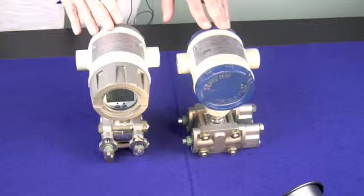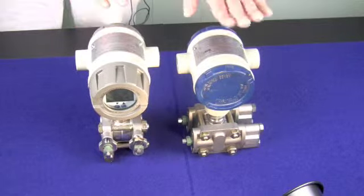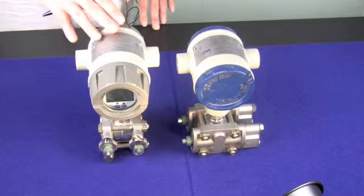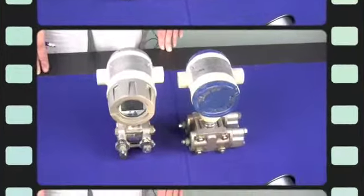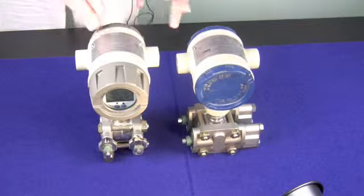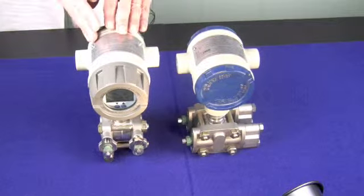The two that we have here are differential pressure transmitters. The one with the blue cap has HART communication. The one without the blue cap has Honeywell communication. One of the first things that you can tell us is whether it has a blue cap or a gray cap, which tells us whether it has HART communication or Honeywell communication.